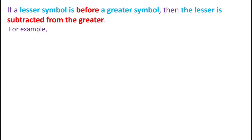The next rule: if a lesser symbol is placed before a greater symbol, then the lesser is subtracted from the greater. For example, IV — here I is the smaller symbol and V is the greater. I stands for 1 and V stands for 5, so we subtract: the value of IV equals 5 minus 1, which equals 4.